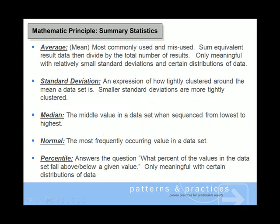Five of the most commonly used and misused summary statistics include the average, standard deviation, median, normal, and percentile.